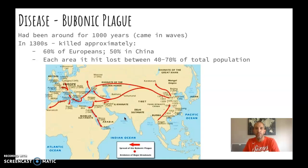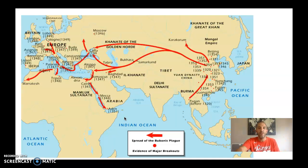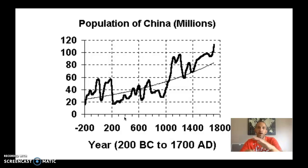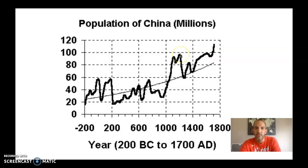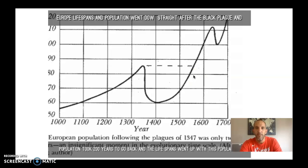If you look at this chart of China's population from 200 BCE through about 1700, you can see a huge bump from about 25 million people up to almost 100 million — mainly from champa rice. There's a small dip from the Mongol invasion, then growth back up to about 100 million. Then you see the drop down to maybe 60 million from the plague, before it increases again. These are all rough estimates, as there was no census.